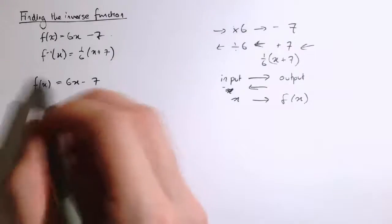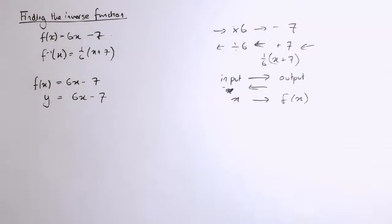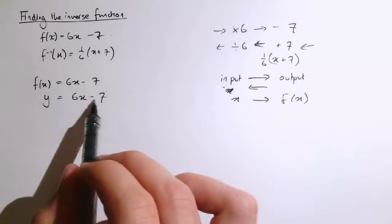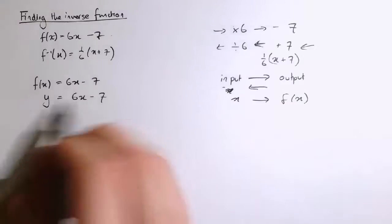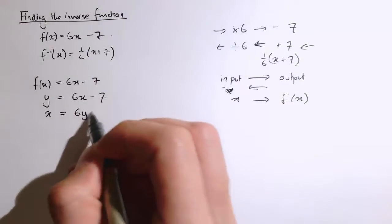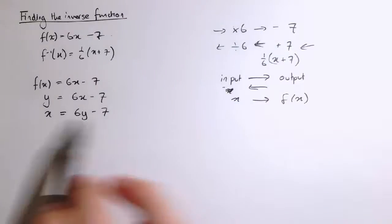one thing we could do is say, well, if that's the original function, the inverse function is exactly the same but with x and y switched around. So I'm going to swap x and y and say that's x equals 6y minus 7. The roles of the input and output are now reversed.